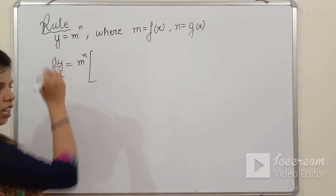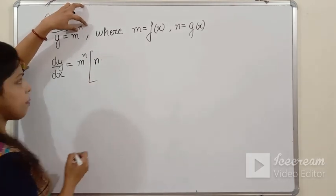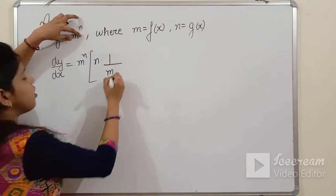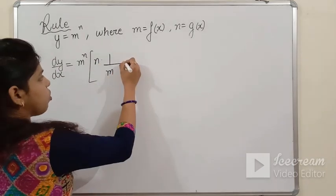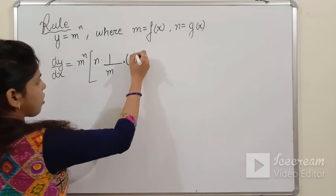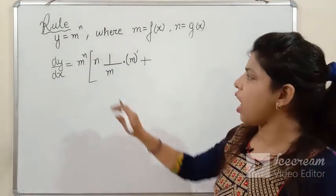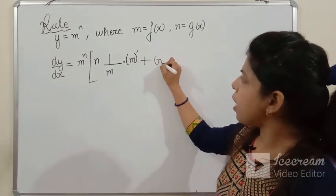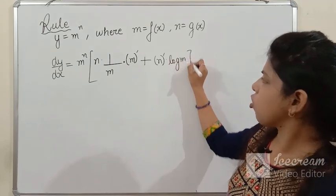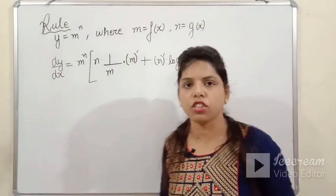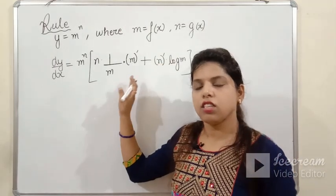The formula: y as it is comes first, then whatever the power is comes in the multiplication, and 1 upon m comes in the denominator. Using the chain rule, we also take the derivative of m, and then plus — we also differentiate n with respect to x. That is the simple rule — just note it down.